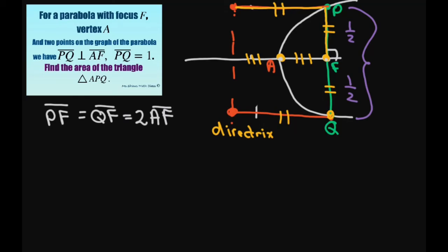So now that we have that, we know therefore that AF here is 1 fourth, because it's going to be half of 1 half, which is 1 fourth. I'm going to draw a little triangle here. This is the triangle that they want. So here's your triangle.